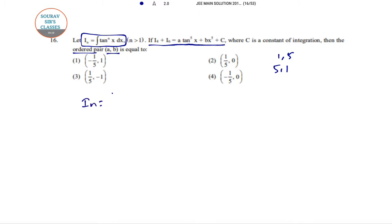In is integration of tan to the power nx dx. That is equal to integration of tan to the power n minus 2 times tan squared x dx. After introduction of this term, the scenario changes a little bit. This is tan squared x dx equals sec squared x minus 1 dx.